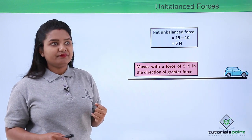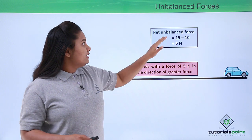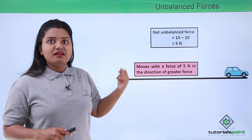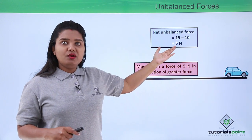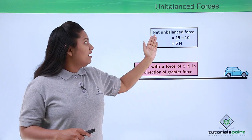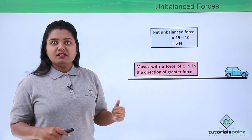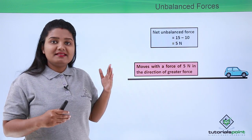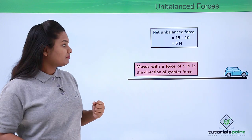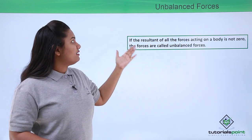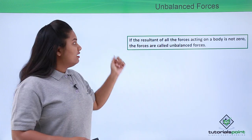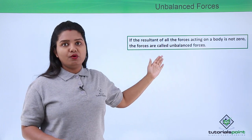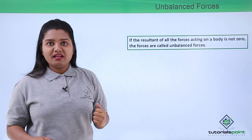Since the resultant of all forces acting on the toy car is not zero, we call this an unbalanced force. A set of forces that do not add up to zero, or which add up to a non-zero number, are said to be unbalanced forces. We define unbalanced forces as: if the resultant of all forces acting on a body is not zero, the forces are called unbalanced forces.